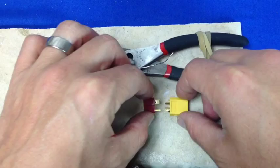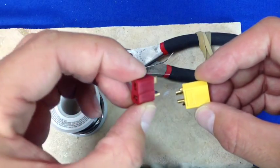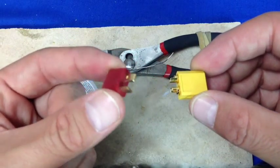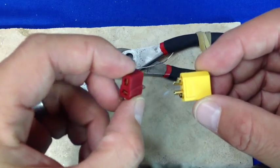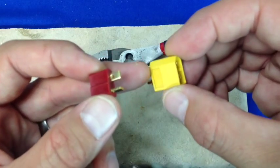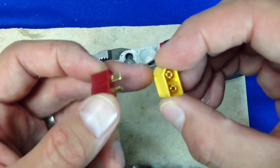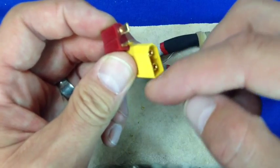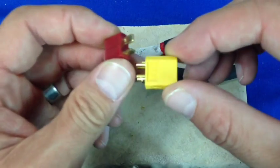So what I'm going to be using is a Dean's plug that looks like this which is basically female and an XT60 plug that looks like this. This is kind of female on the outside but male on the inside. It's kind of funny how they do this.